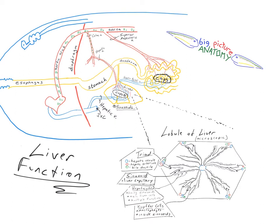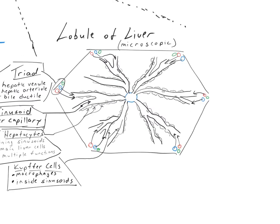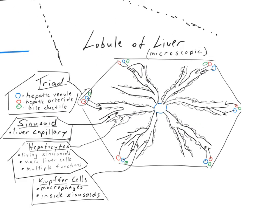Now let's take a look at what happens to that blood in the liver at the cellular level by magnifying up to the microscopic level and looking at what we call a lobule of the liver. The liver has a very typical, unmistakable look under the microscope with these almost geometric-looking hexagonal lobules. In each corner of each lobule is what we call a triad — a triad of vessels which include branches of the hepatic portal vein, a branch of the hepatic artery, and a branch of the bile duct. In the center of the lobule is what's called the central vein.